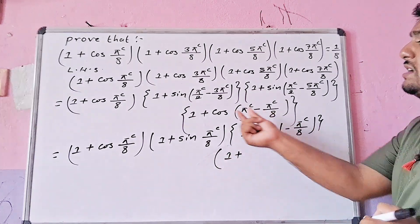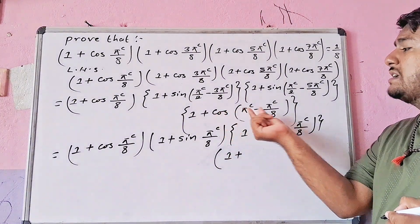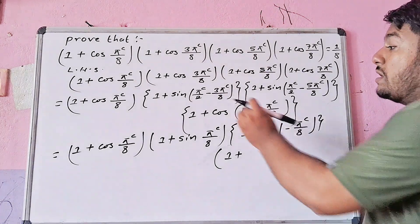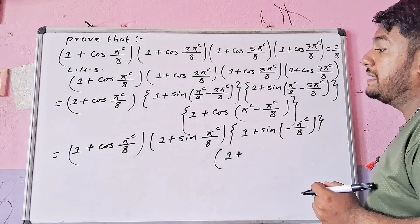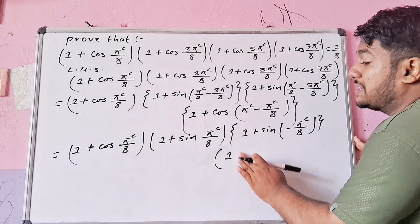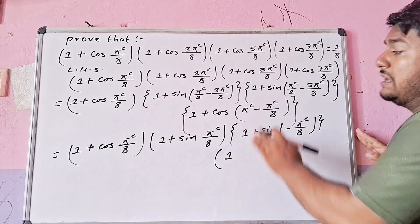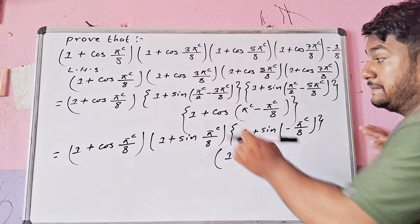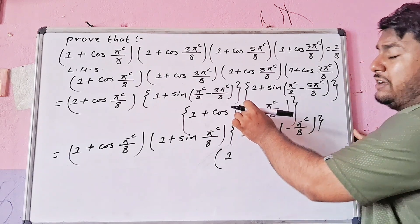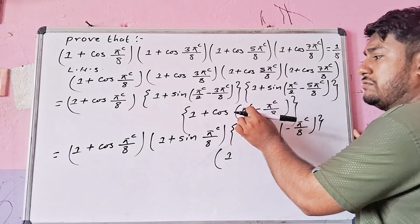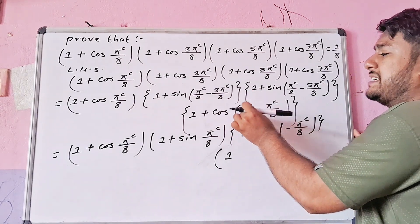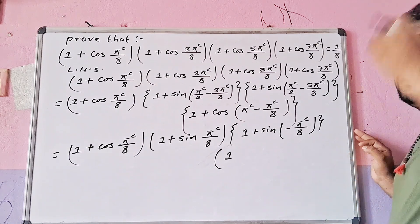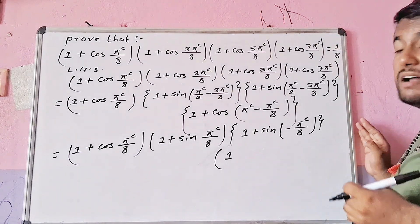Using the identity cos(180° − θ) = −cos θ, we transform the remaining cosine terms accordingly.